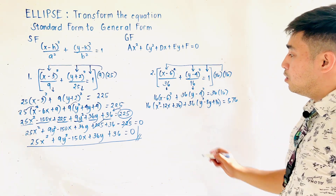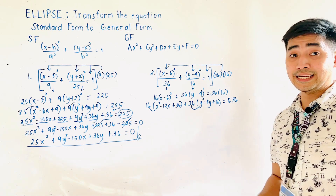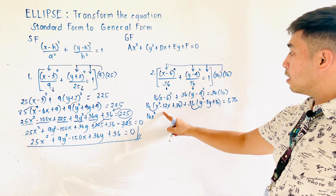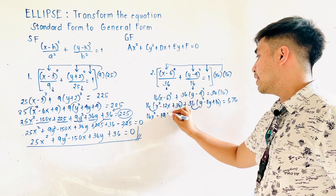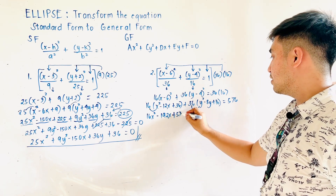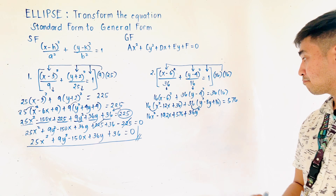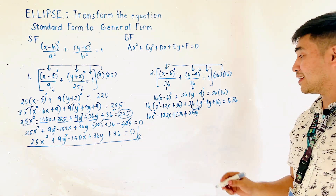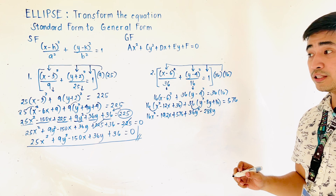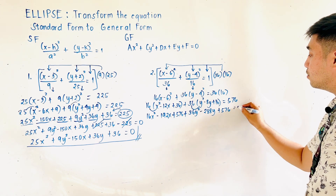We distribute 16 and also distribute 36 to their groups. 16 times x² is 16x². 16 times −12x is −192x. 16 times 36 is +576. Then: 36 times y² is 36y². 36 times −8y is −288y. 36 times 16 gives us +576, and this is equal to 576.